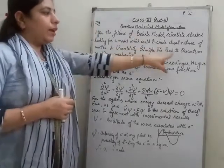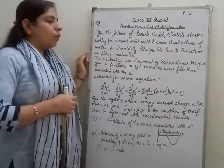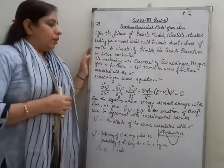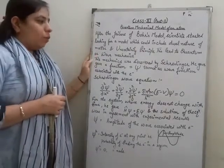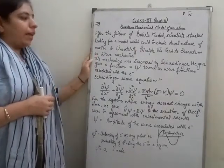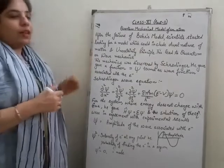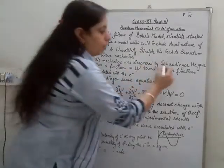They came up with the quantum or wave mechanical model. This mechanics was first of all discovered by Schrödinger.